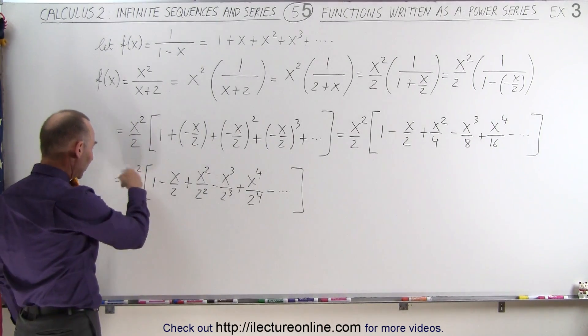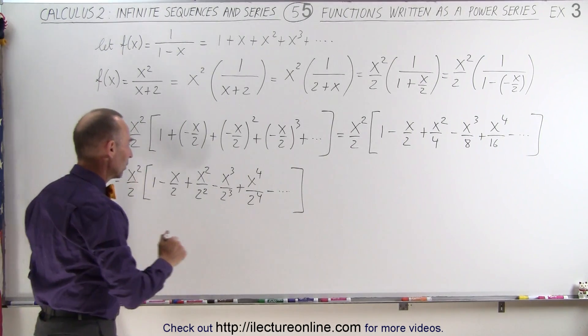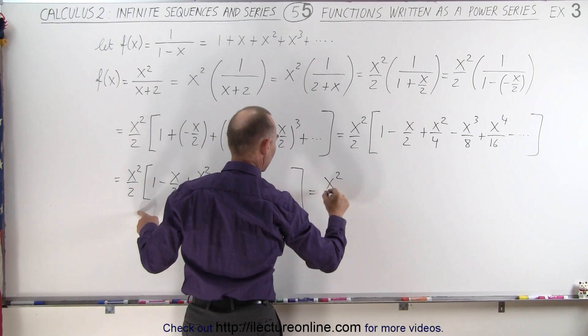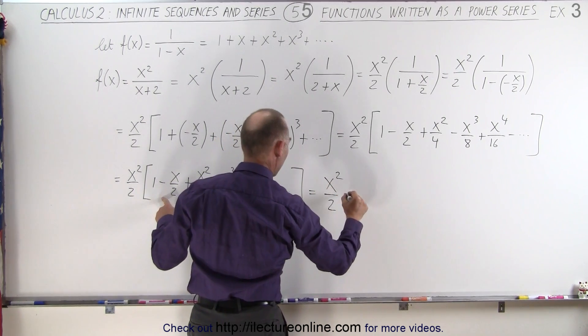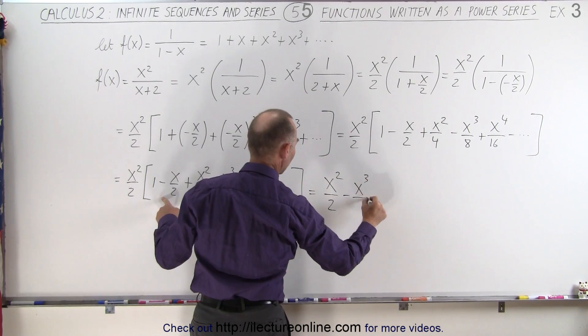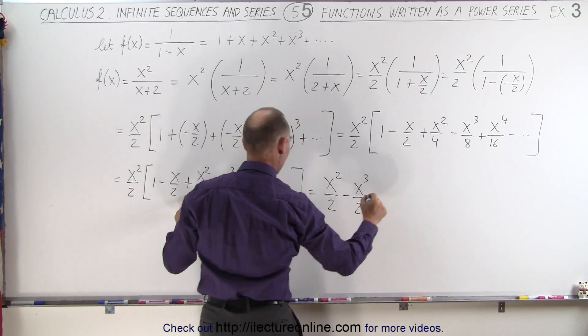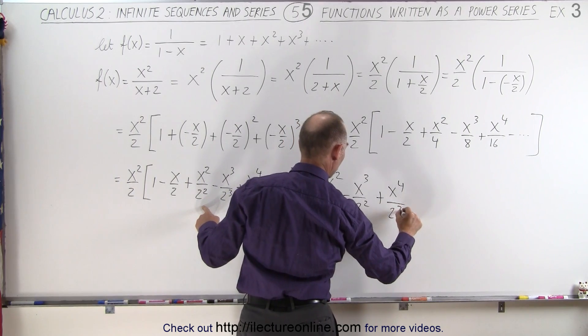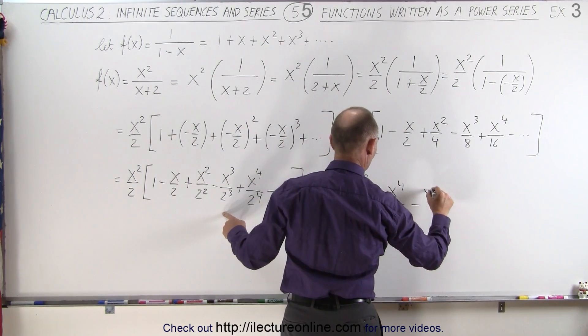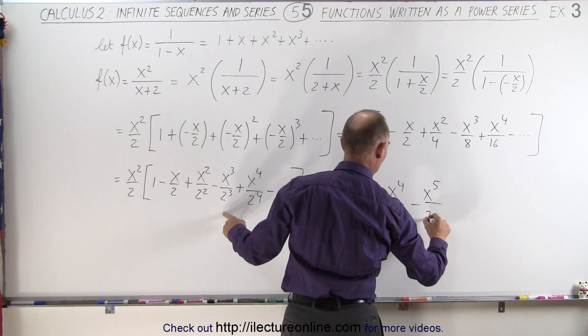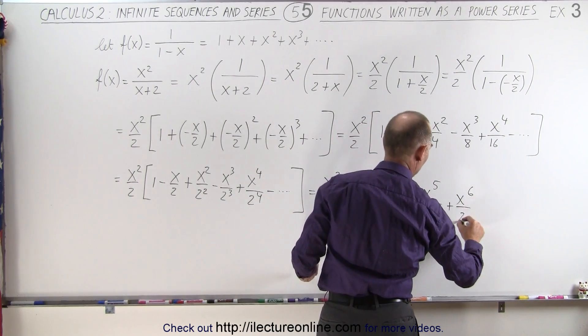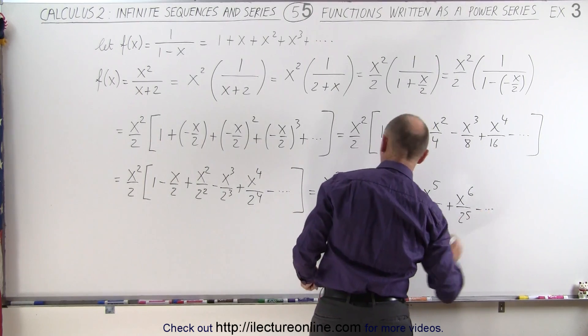Now we can go ahead and multiply this in over here, which means this is going to give us x squared divided by 2 to the first power minus x cubed divided by 2 squared plus x to the fourth divided by 2 cubed minus x to the fifth over 2 to the fourth plus x to the sixth over 2 to the fifth minus and so forth.